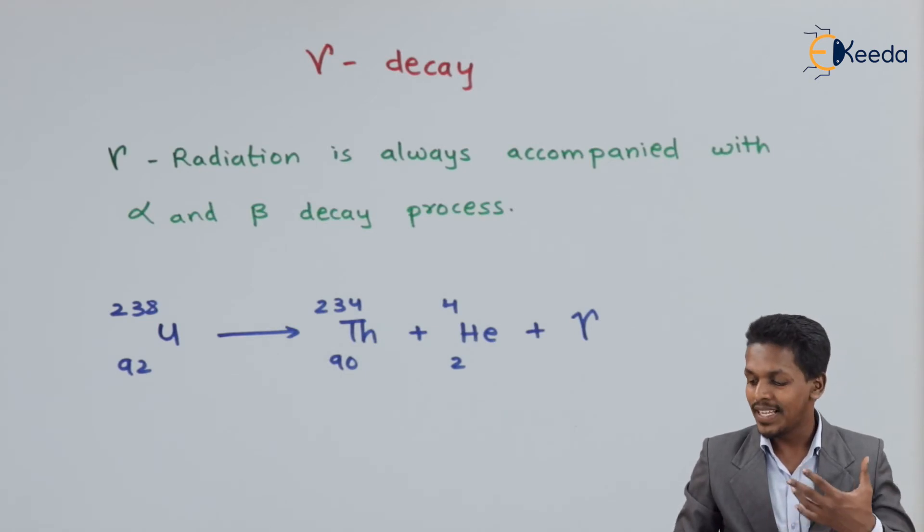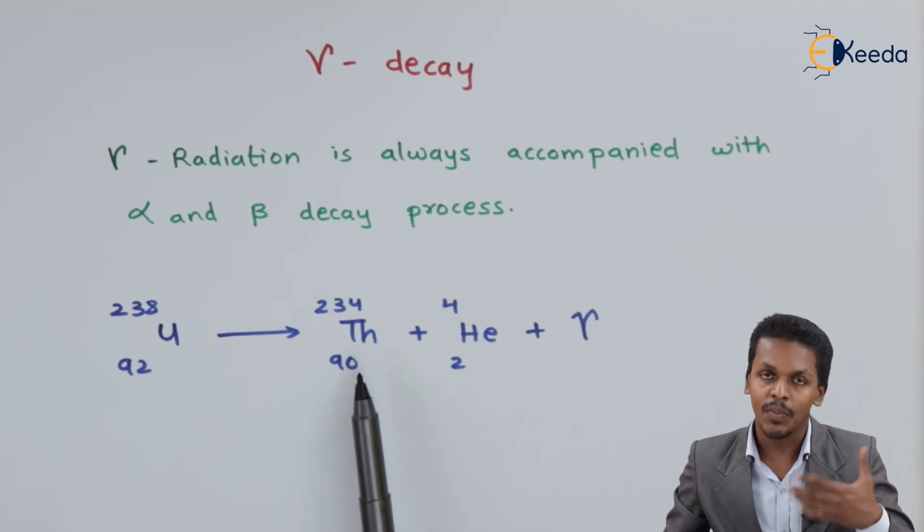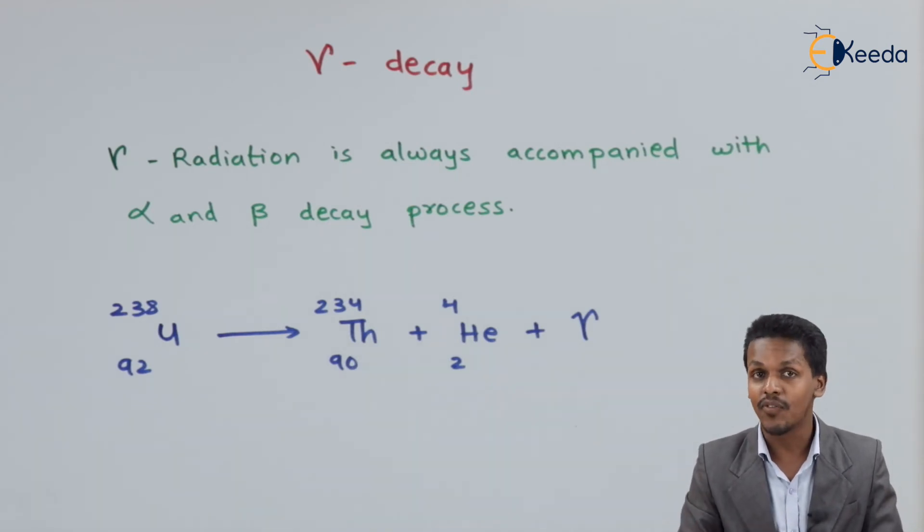When the thorium is produced, it is in an excited state. When it de-excites, it produces energy of 0.048 MeV. That is how gamma decay works.